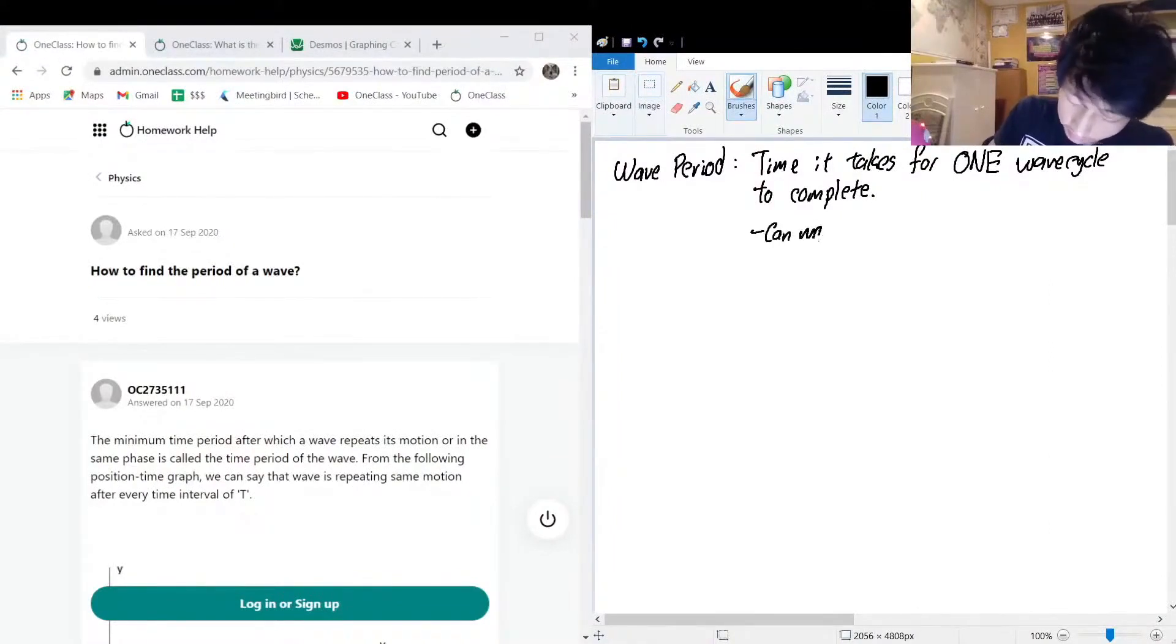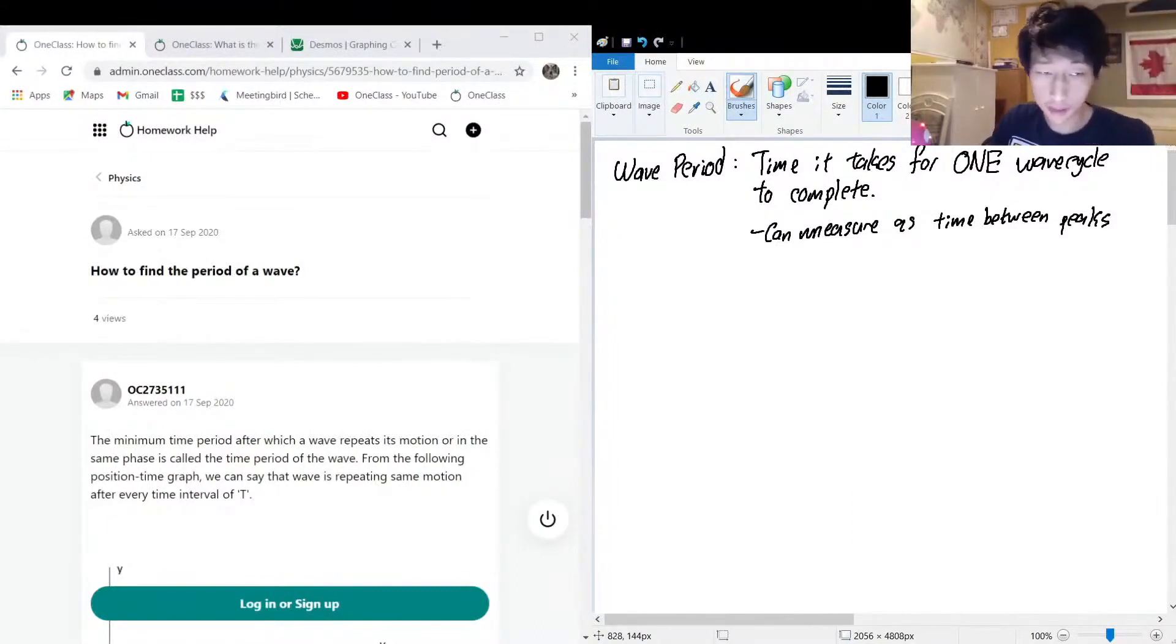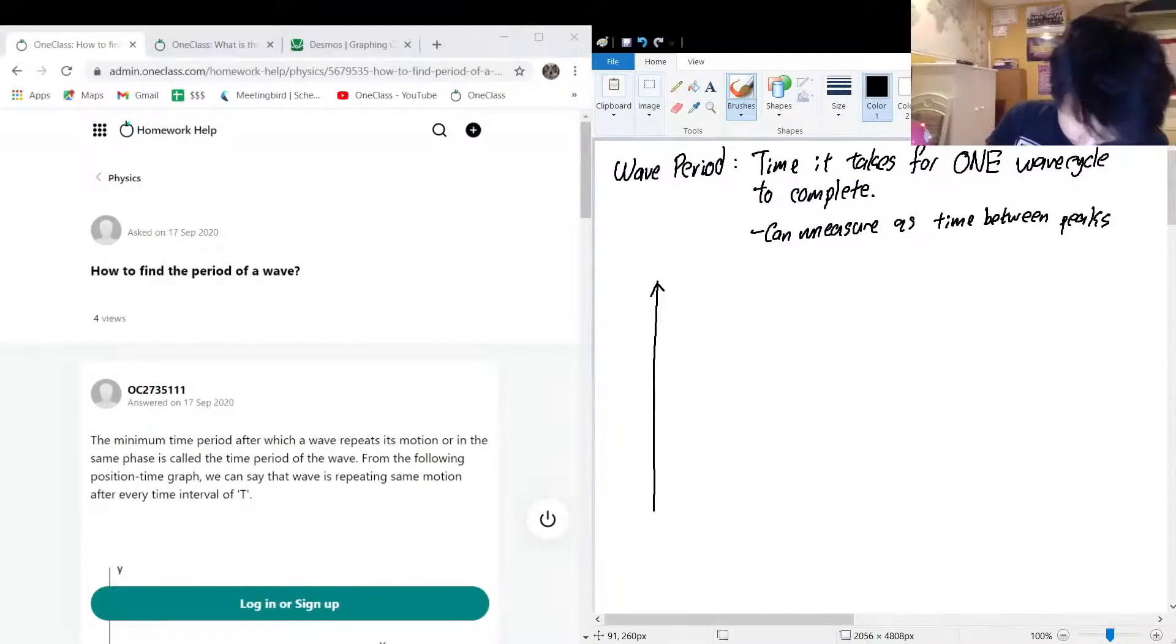Suppose that we have a graph of a wave that looks a little something like this. Here we have our W for wave, and along here we have time.